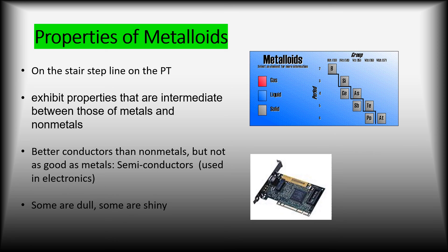The metalloids sit along the stair-step line on the periodic table and exhibit properties in between those of metals and nonmetals. They're better conductors than nonmetals, but not as good as metals — they're called semiconductors, and they're used in electronics. Silicon and germanium are widely known semiconductors. Silicon is a metalloid, and Silicon Valley in California is named after it — that's where major tech companies like Apple are headquartered. Some metalloids are dull, some are shiny — they're kind of in between metals and nonmetals.